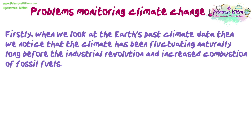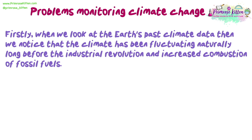Firstly, when we look at the Earth's past climate data we notice that the climate has been fluctuating naturally long before the Industrial Revolution and increased combustion of fossil fuels. Knowing this can make it difficult to know what proportion of the changes we are seeing currently are natural fluctuations and what proportion is the result of human activity. This can make it difficult when planning which laws and regulations need to be put into place, as some changes in climate could be natural.